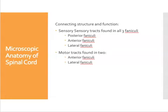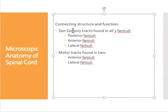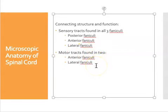We can make connections between the structural funiculi and the functional tracts. The sensory ascending tracts are found in all three structural locations: the posterior funiculi, the anterior funiculi, and the lateral funiculi. But for motor descending tracts, you only find them in two — the anterior and the lateral. There are no descending tracts in the posterior funiculi.